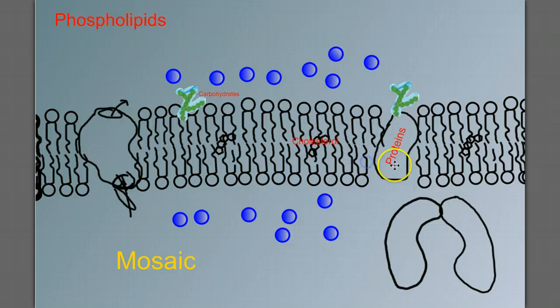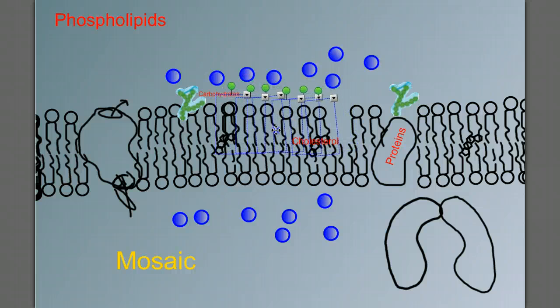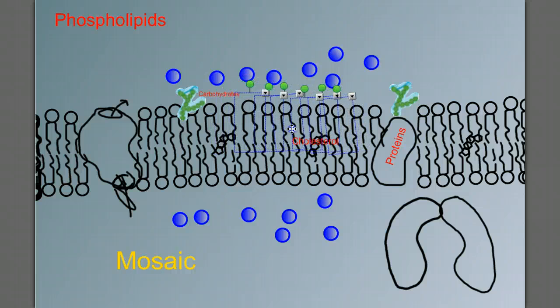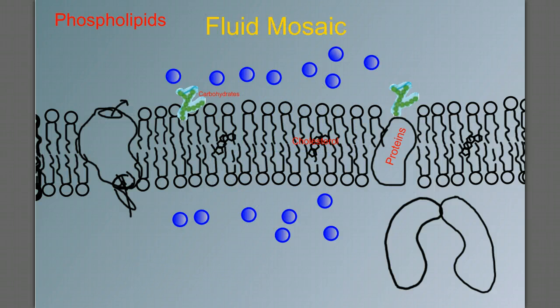The proteins can move through the membrane. They can slide back and forth. The outer layer and the inner layer can move past each other. They can slide. So this mosaic is also fluid. So we can call this the fluid mosaic model of the cell membrane.